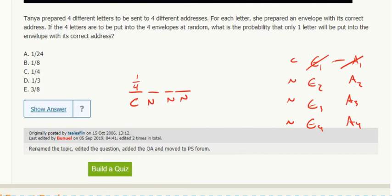Now for envelope two, there are three addresses remaining. One of them is correct, two are not correct. So that's two out of three. I'm going to say I put that with that.